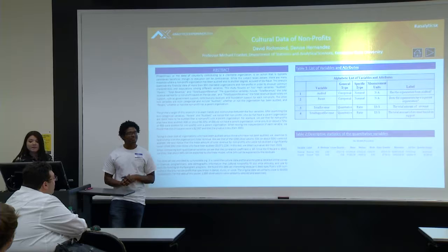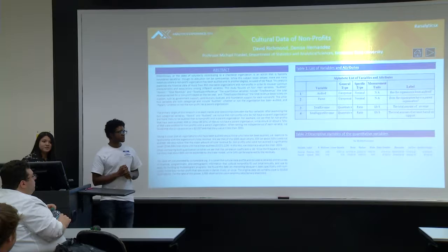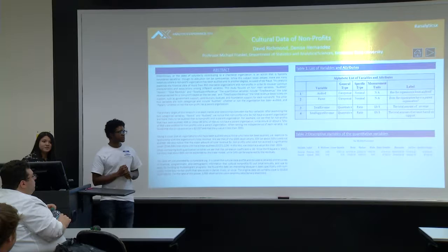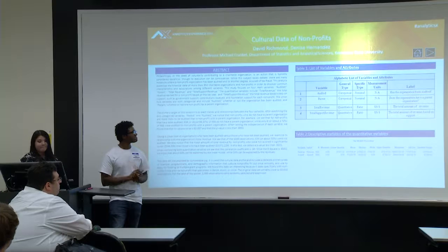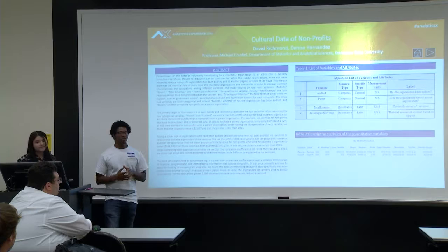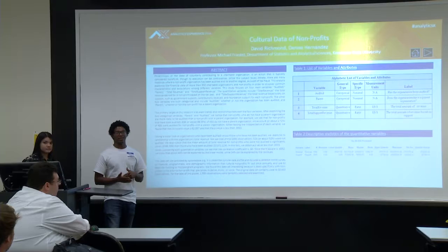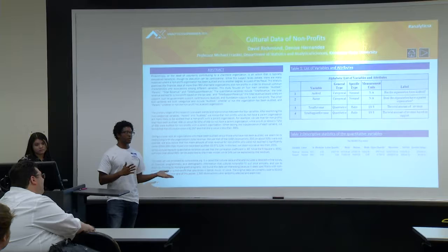We chose four variables: audited, parent, total revenue, and total support revenue. Audited means whether nonprofits were audited by the IRS. Parent means whether the organization has a parent organization overseeing it — for example, in Georgia, the High Museum, Alliance Theater, and Atlanta Symphony Orchestra are all individual nonprofits but are overseen by the Woodruff Arts Center, which is their parent. The question we were trying to answer was: what would cause a nonprofit to be audited? What characteristics would cause an audit? We thought about nonprofits sometimes being accused of tax fraud — but they have to be audited first.